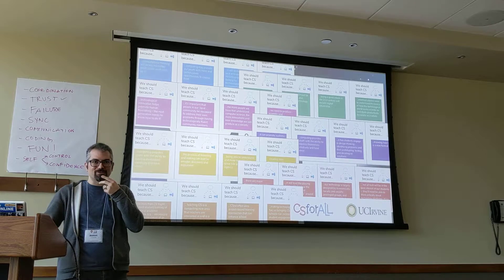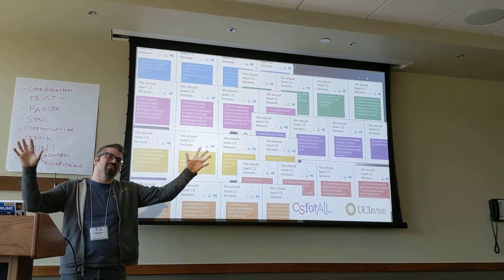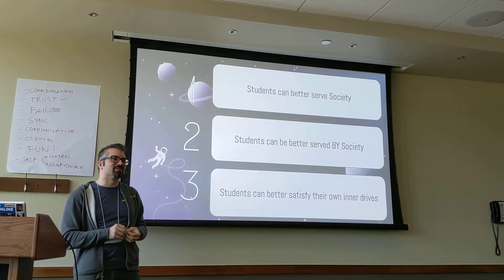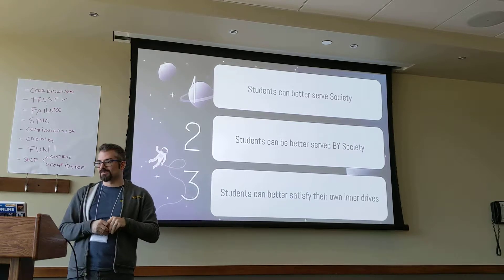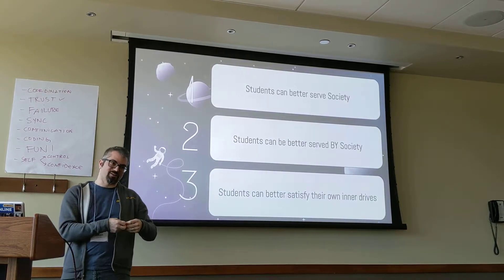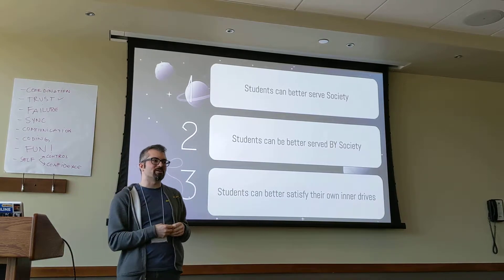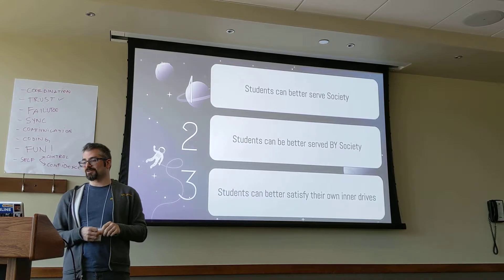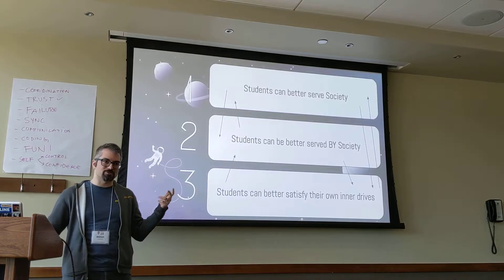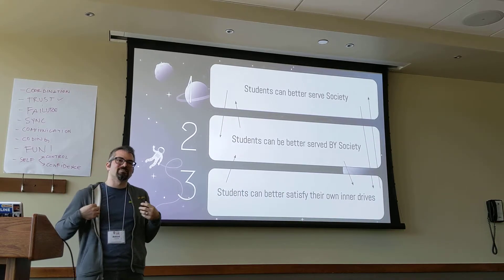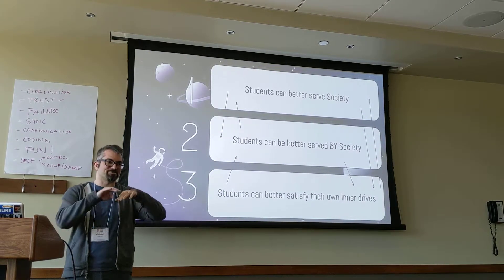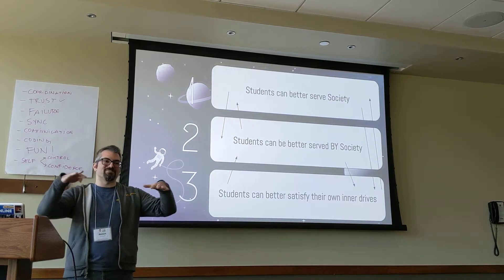CS for All and UC Irvine took those categories and divided them into many more, but I want to divide them into fewer. Basically it boils down to: we think teaching computer science is valuable because students can better serve society with those skills; students can be better served by society through systemic changes from their knowledge; and students can better satisfy their own inner drive so they can express themselves and have fun. These things are all interrelated — all words have to be a bell curve of meaning with tails that intermingle.